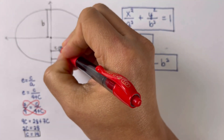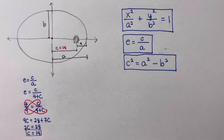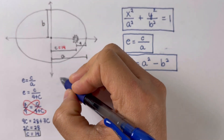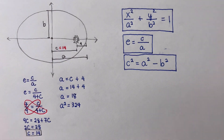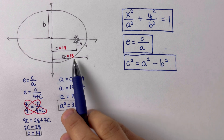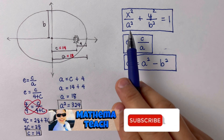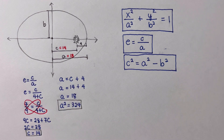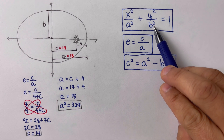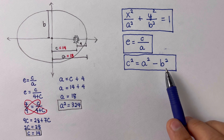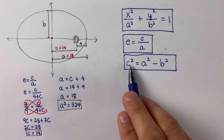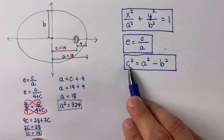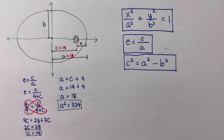Our value for c is 14. Therefore, a = c + 4 = 14 + 4 = 18, giving us a squared = 324. Now we need to solve for b squared using the equation c² = a² − b². Plugging in a² = 324 and c² = 196, we solve for b squared.